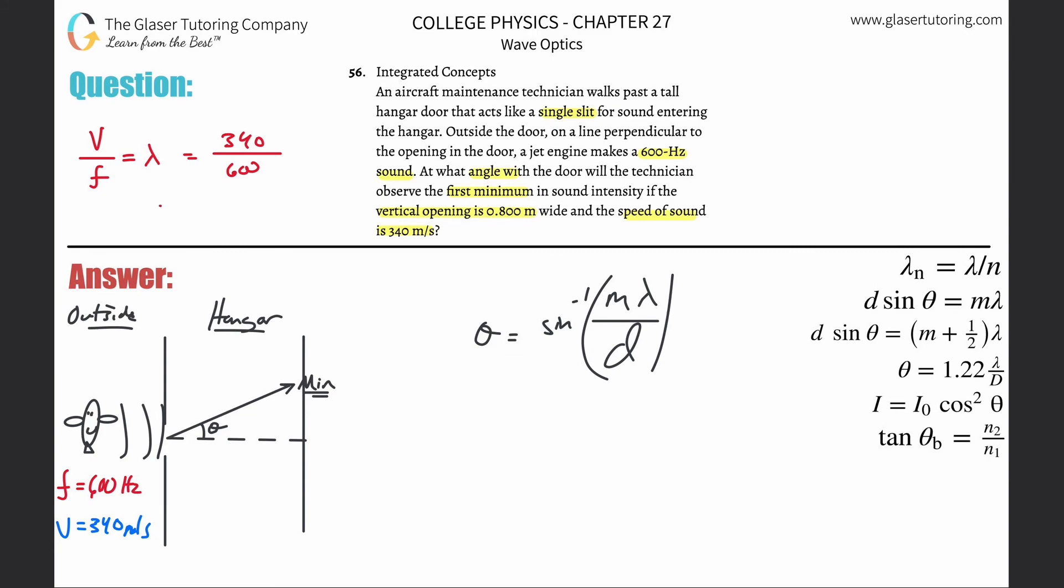340 over 600 - nope, I did 340 over 60, but that really won't make that much of a difference because the decimal is just going to move. But we realize that the wavelength here is going to be about 0.5 repeating. So that's the wavelength in meters.